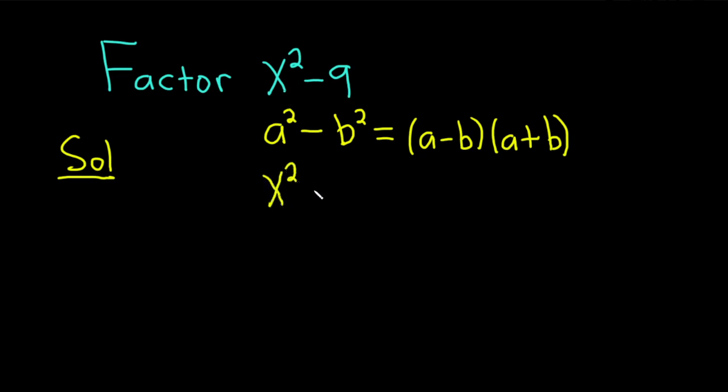So we have x squared minus, and then we can write the 9 as 3 squared.